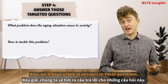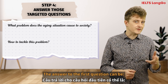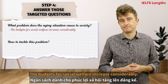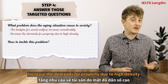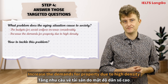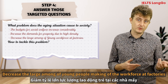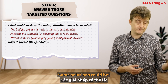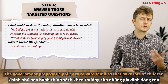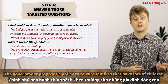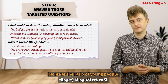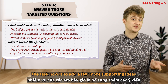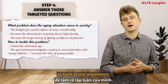Now let's look at some answers to these questions. The answer to the first question could be: social welfare budgets will increase considerably; property demand will increase due to higher population density; and there will be a decrease in the number of young people making up the workforce in factories. Some solutions could be to extend the retirement age, or for the government to propose a policy rewarding families with lots of children, which will increase the ratio of young people. Now we've got a general frame for this essay — the task is to add supporting ideas to back up our arguments.